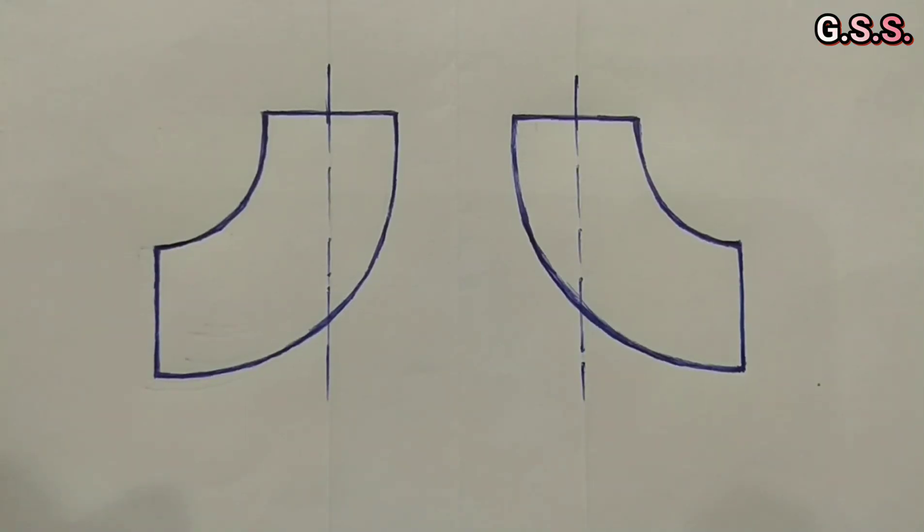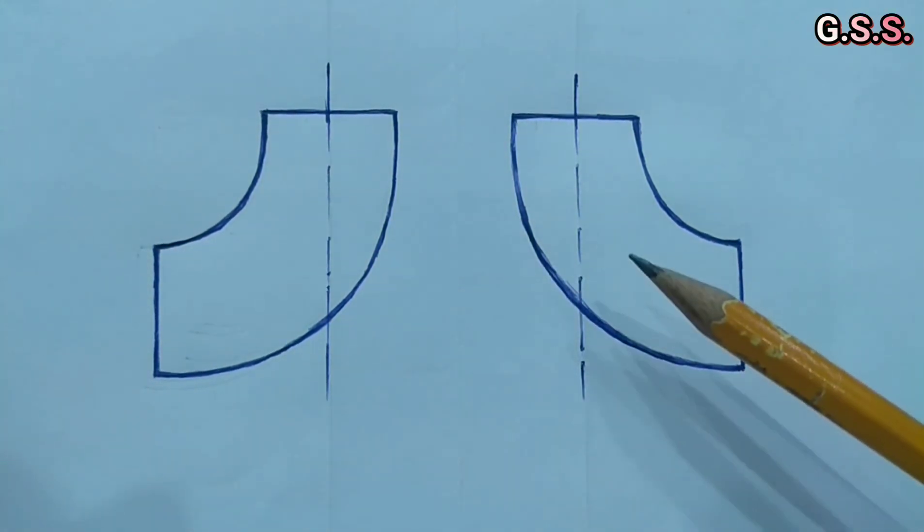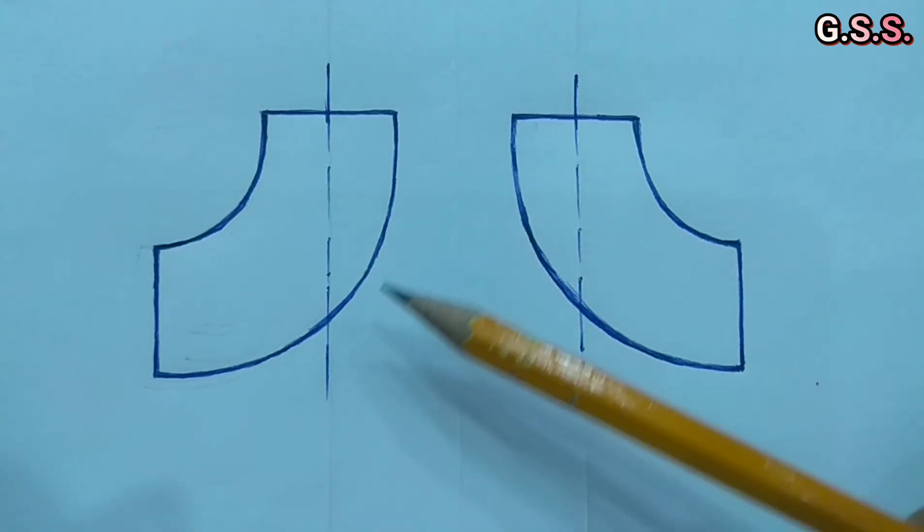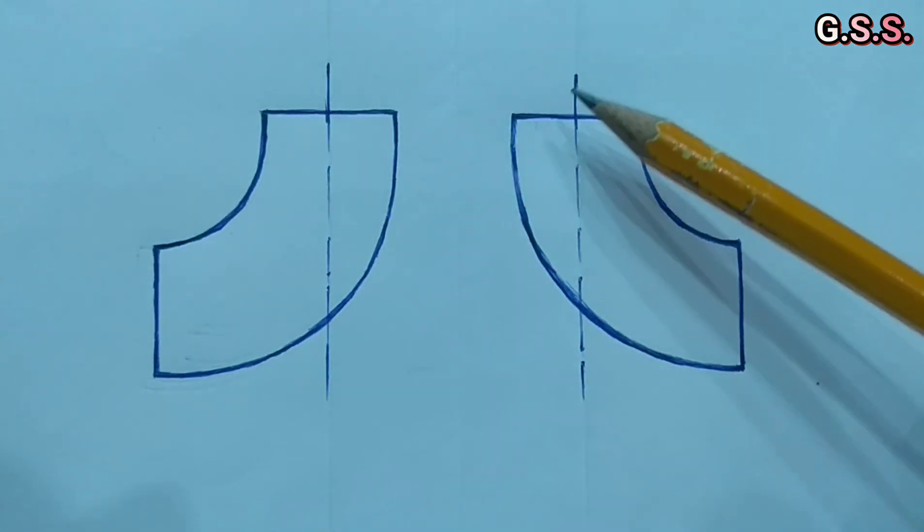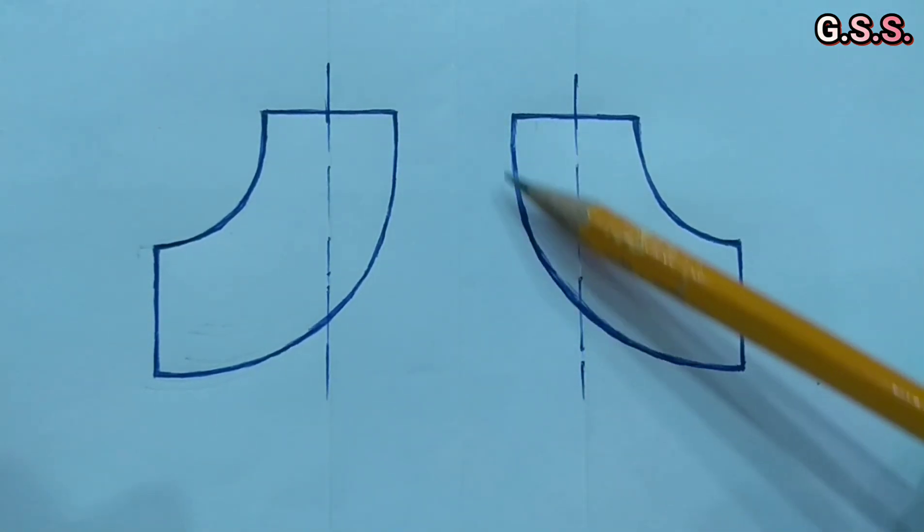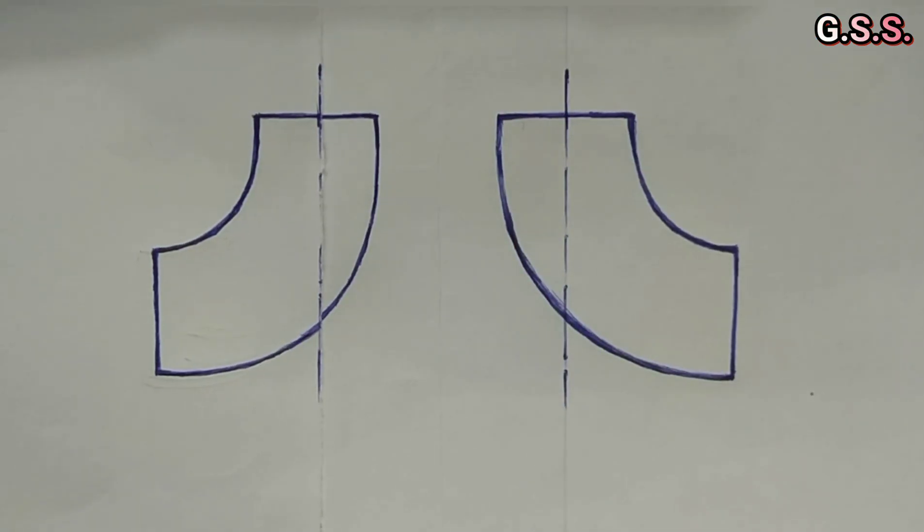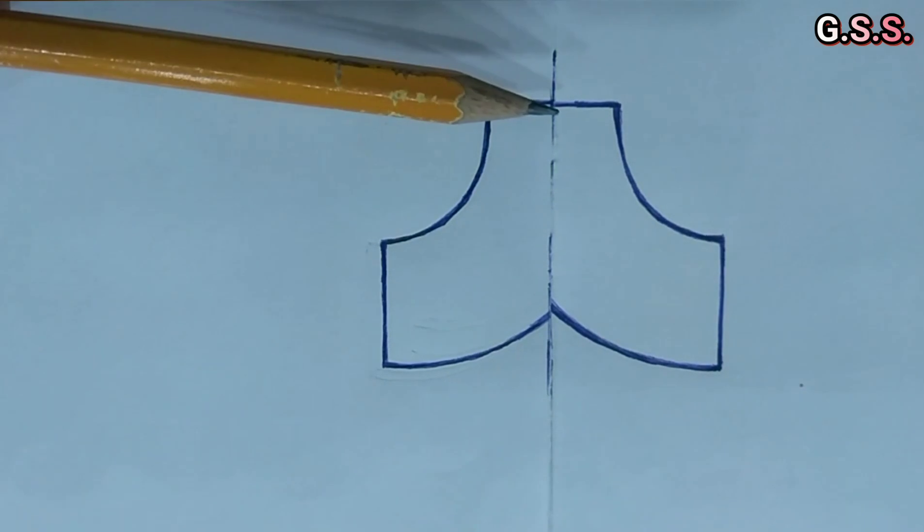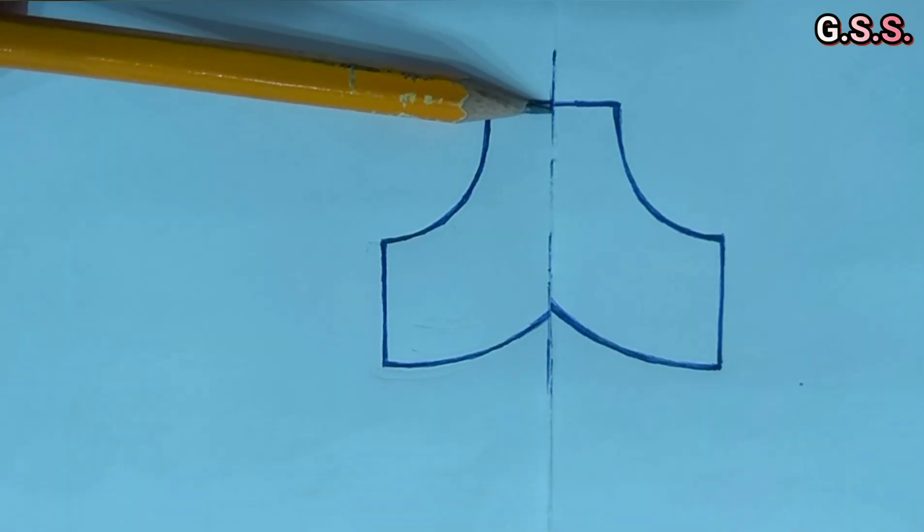Now we will see how to make elbow T or sweeping T from two elbows. These are two elbows and we have to cut and remove this portion from center line of this elbow and this portion from center line of this elbow. Then we make elbow T or sweeping T after joining and welding these two elbows.